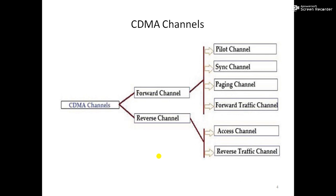The mobile station can obtain the exact system time by synchronizing to the short code. The paging channel's main objective is to send out pages — notifications of incoming calls — to the mobile station. The base station uses paging channels to transmit system overhead information and mobile station-specific messages. Forward traffic channels are code channels used to assign calls — usually voice and signaling traffic — to individual users.